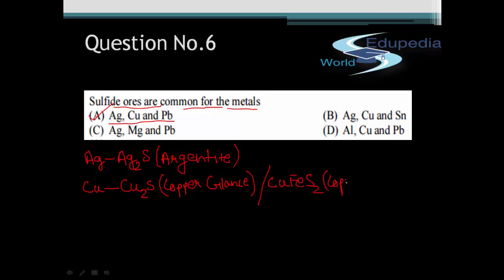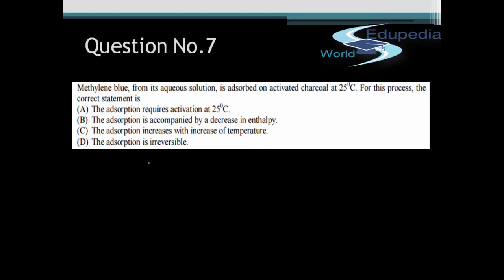This ore is called copper pyrites. For lead, which is very popular, the ore for Pb is PbS, commonly called Galena. As we can see, all three ores - PbS, Cu2S, and Ag2S - are sulfides. Let's move to the next question, which is question number 7.